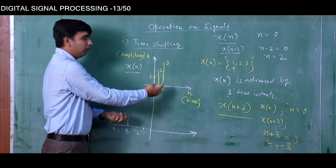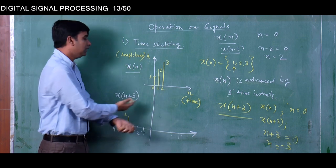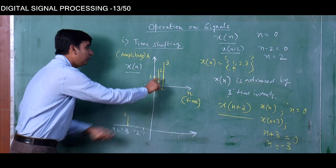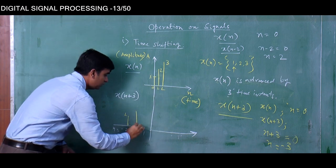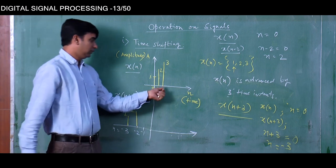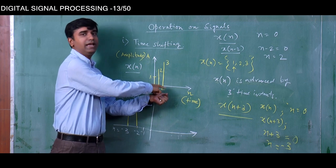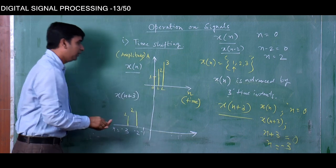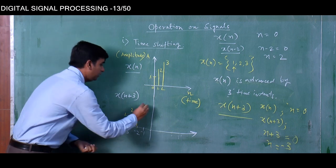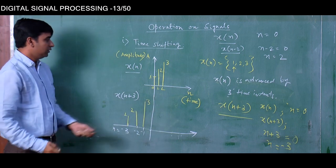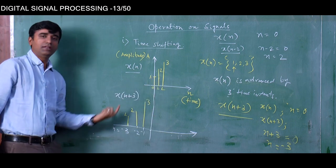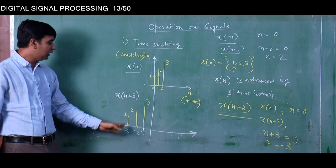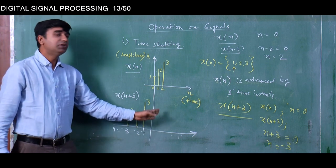The value that was at 1 will also be shifted by 3 time instants — it comes at 0, then minus 1, then minus 2. So at minus 2 this value will be 2. The value that was at instant 2 will also be shifted to the left by 3 time instants, coming to 1, 0, and then minus 1. So this value will appear at minus 1. The signal was starting at 0 and is now starting at minus 3 — the signal is advanced in time.